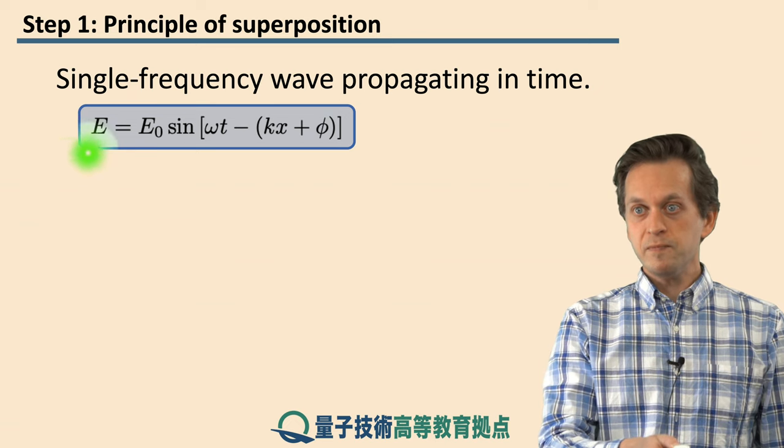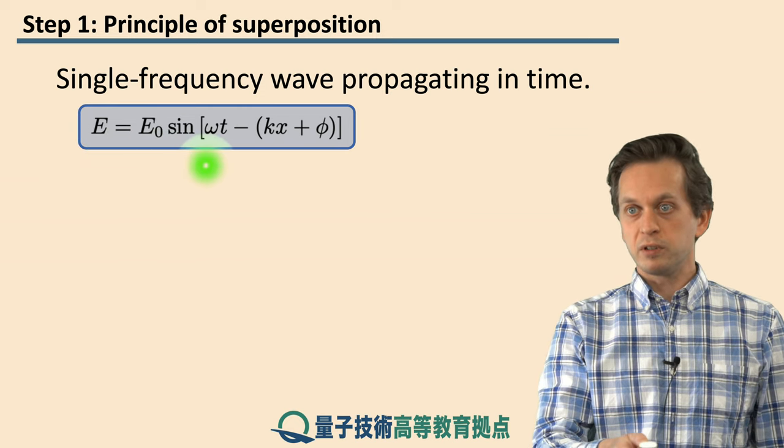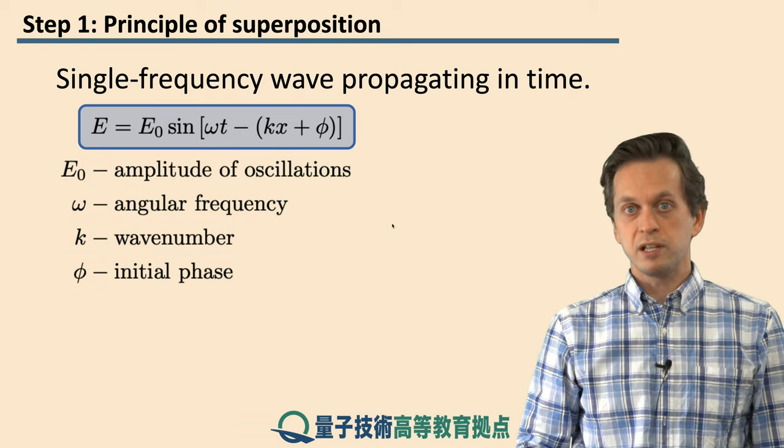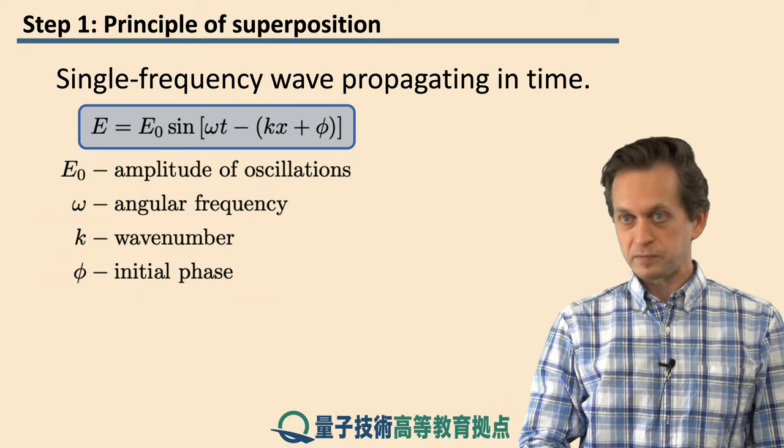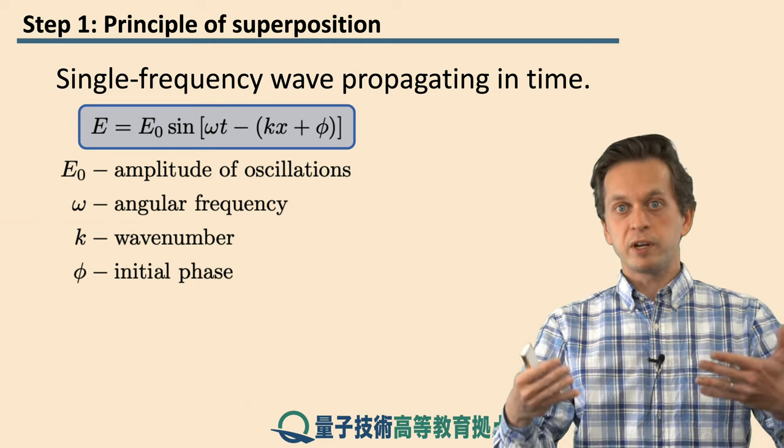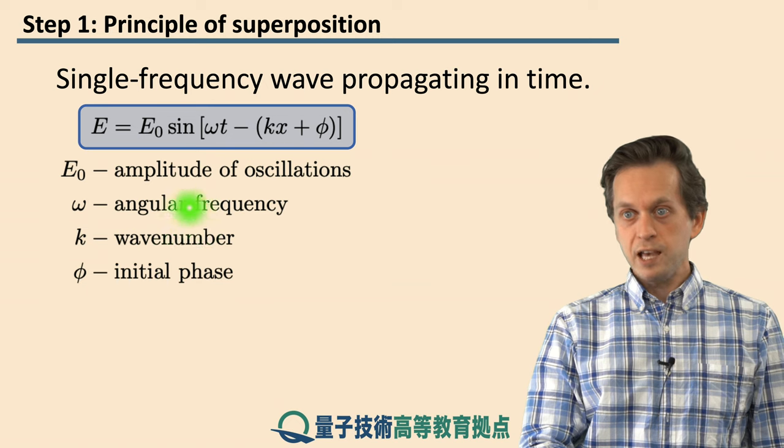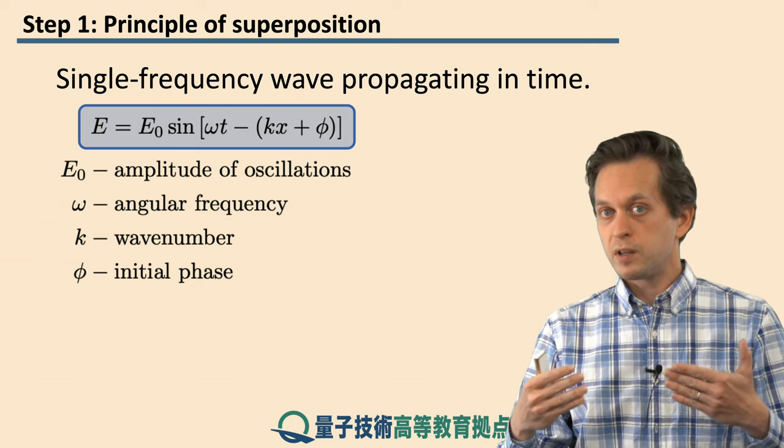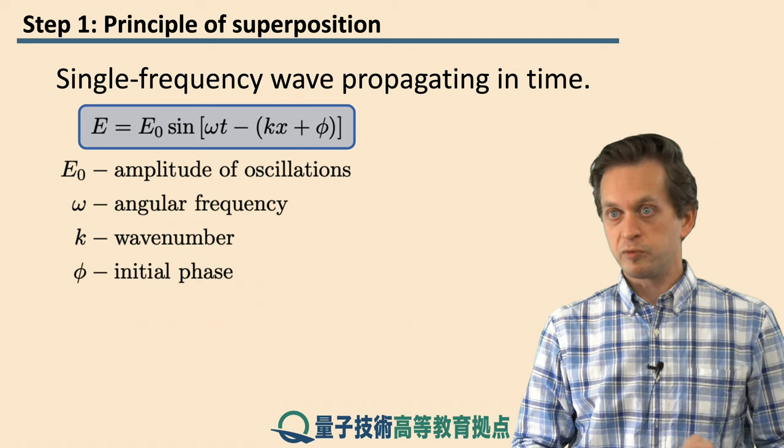We denote the wave with E and it's some constant E₀ times the sine of the following argument, where E₀ designates the amplitude of oscillations. That means how far, how much the wave is disturbing. Omega is the angular frequency and it determines how quickly the wave is propagating in time. Time here is denoted by this small t. K is the wave number.